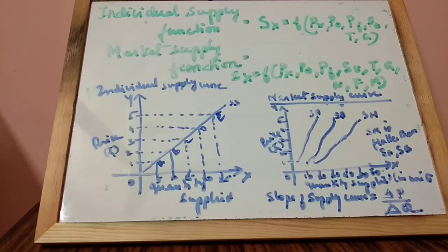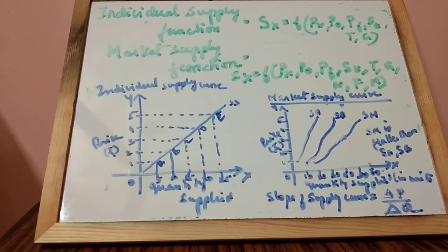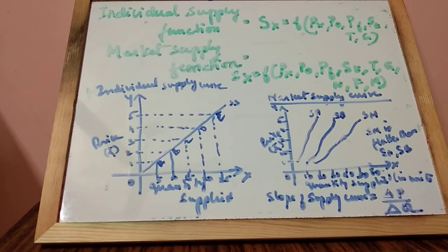For example, when price rises from Rs. 4 to Rs. 8, the quantity supplied increases from 2 units to 4 units. The change in price is 4, and the change in quantity is 2. So the slope equals 4 divided by 2, which equals 2. Therefore, 2 is the slope of the supply curve in this example.